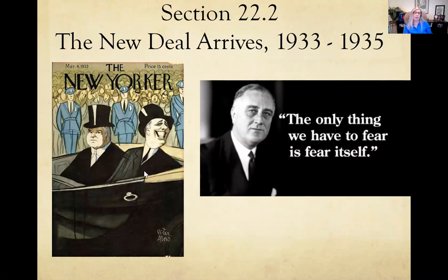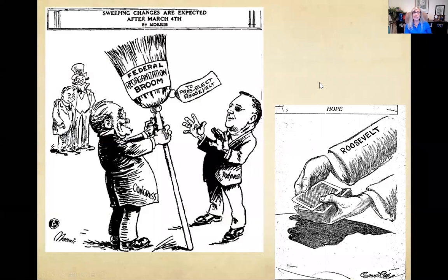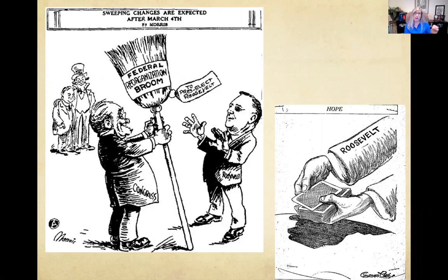In addition to Roosevelt coming in as the Democratic president, a majority Democratic Congress had also been elected — both the House and the Senate. That means Roosevelt's New Deal would have a very strong chance of getting passed with like-minded Democrats. Congress essentially turned it over to him, and what he did was implement within his first hundred days a massive program of New Deal reform.